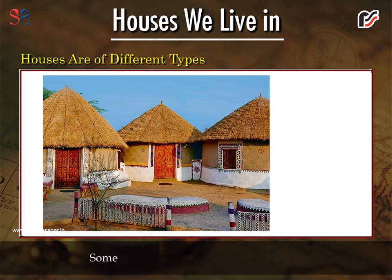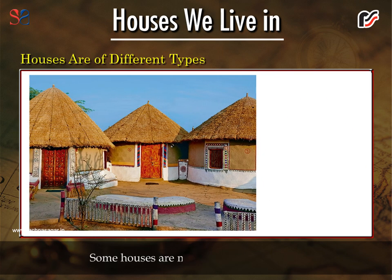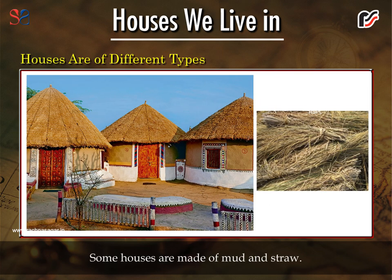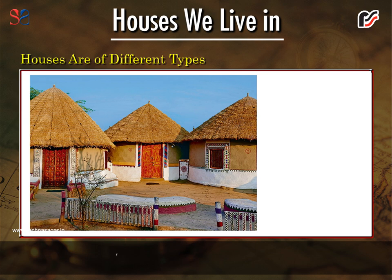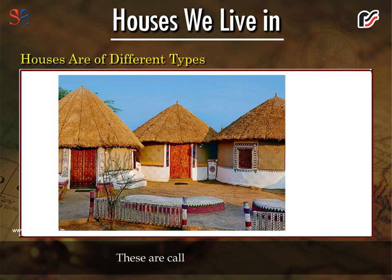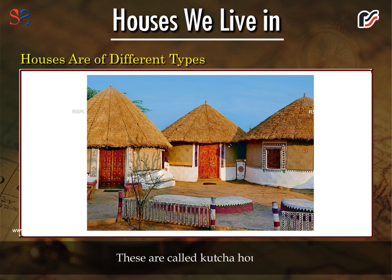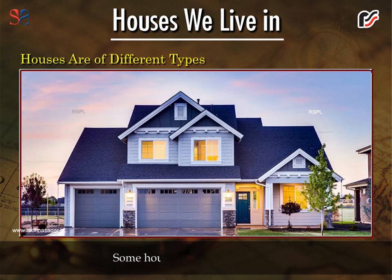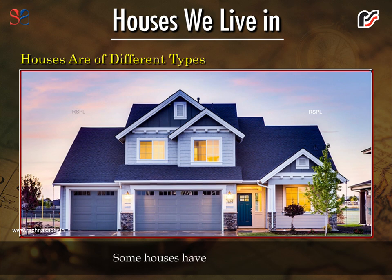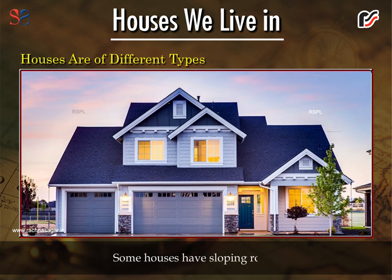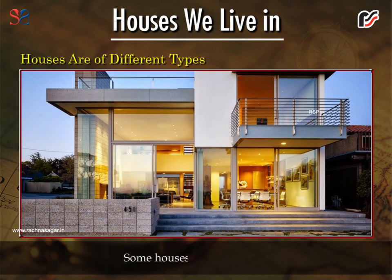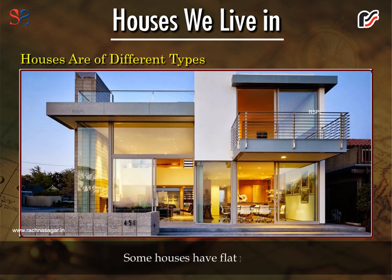Some houses are made of mud and straw. These are called kacha houses. Some houses have sloping roofs, and some houses have flat roofs.